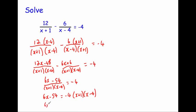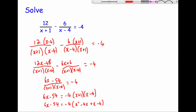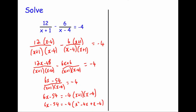So we get 6x minus 54 equals, first expanding the pair of brackets: x squared minus 4x plus x minus 4. Simplifying the inside gives x squared minus 3x minus 4. So 6x minus 54 equals minus 4 bracket x squared minus 3x minus 4.